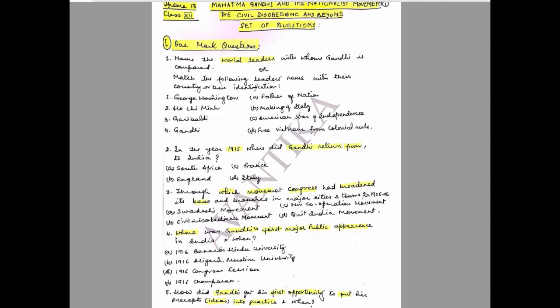Question 2: In the year 1915, where did Gandhi return from to India? Options are: A) South Africa, B) England, C) France, D) Italy. Choose one among them.